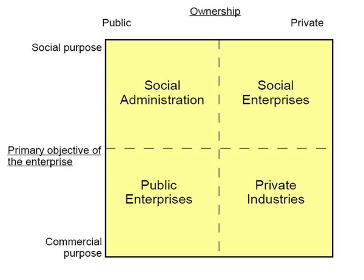One criterion is a descriptive feature: intermediary function — social economical enterprises and organizations have an intermediary function between public and private. If none of the above criteria is met, or the primary object of the enterprise is commercial, it is located at the bottom of the vertical axis. Between social and commercial purposes, if the above criteria are partially met, the enterprise is located along the vertical axis according to its self-definition.